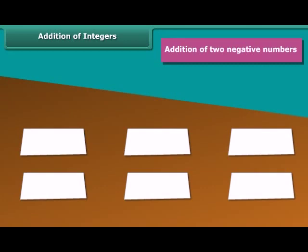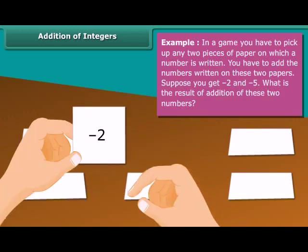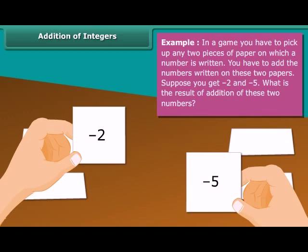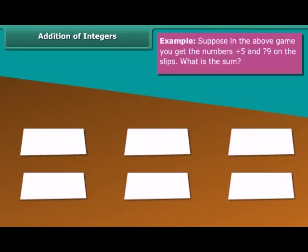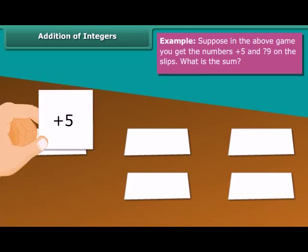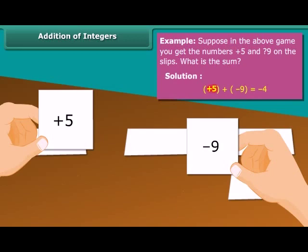Addition of two negative numbers. Example: In a game, you pick up two pieces of paper with numbers written on them. Suppose you get minus 2 and minus 5. The result is: minus 2 plus minus 5 equals minus 7. Addition of two integers with different signs: suppose you get plus 5 and minus 9. The sum is plus 5 plus minus 9, which equals minus 4.